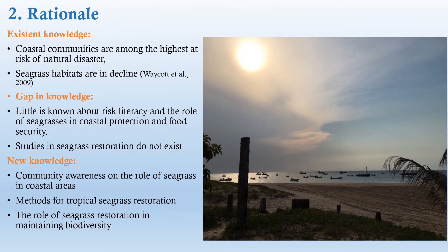We know that in Mozambique, coastal communities are among the highest at risk of natural disaster. We also know that seagrass habitats are in decline. Yet, little is known about risk deterrence and the role of seagrass in coastal protection and food security. Yet, studies in seagrass restoration do not exist. So, we expect with this study to improve community awareness on the role of seagrass in coastal areas, to provide new knowledge on methods of tropical seagrass restoration, and to improve the knowledge on the role of seagrass restoration in maintaining biodiversity.